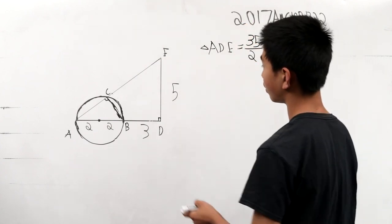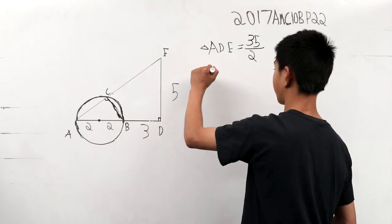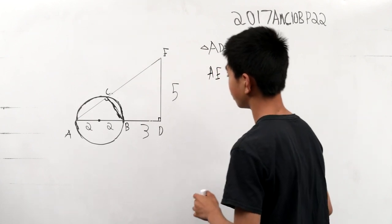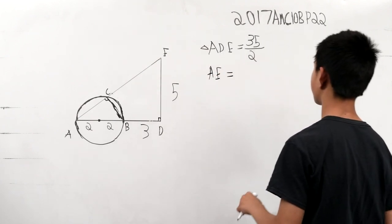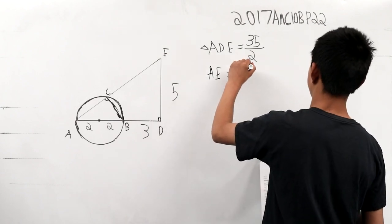And we can now find the length of this hypotenuse AE. AE is equal to 7 squared plus 5 squared, 49 plus 25 square root 74.